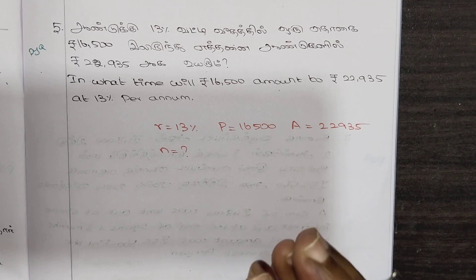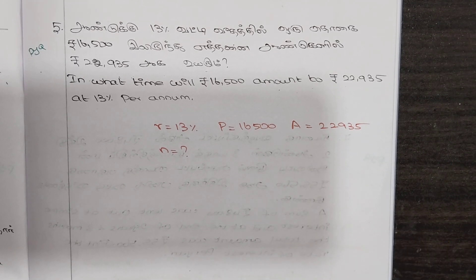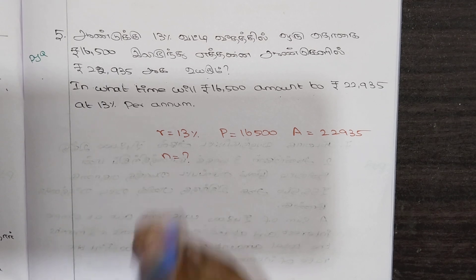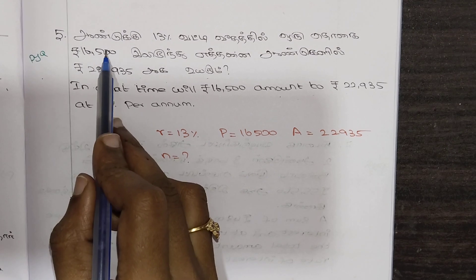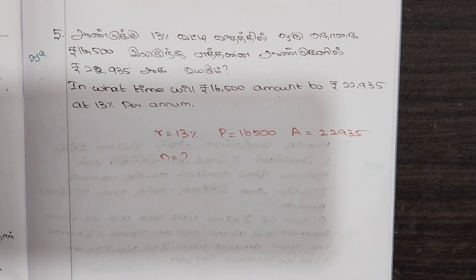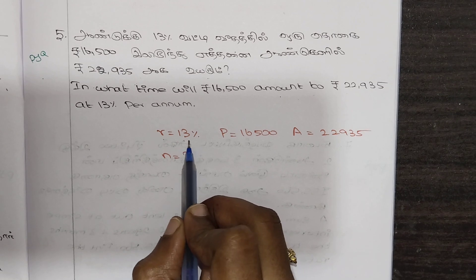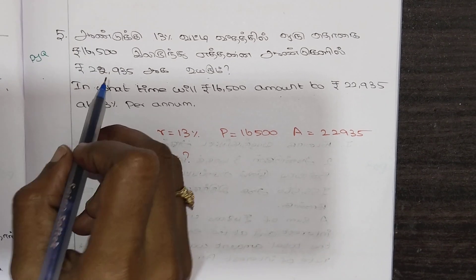We need to find the time for 16,500. Since the principal is 16,500 and the amount is 22,935, we will identify the values. The principal is 16,000.